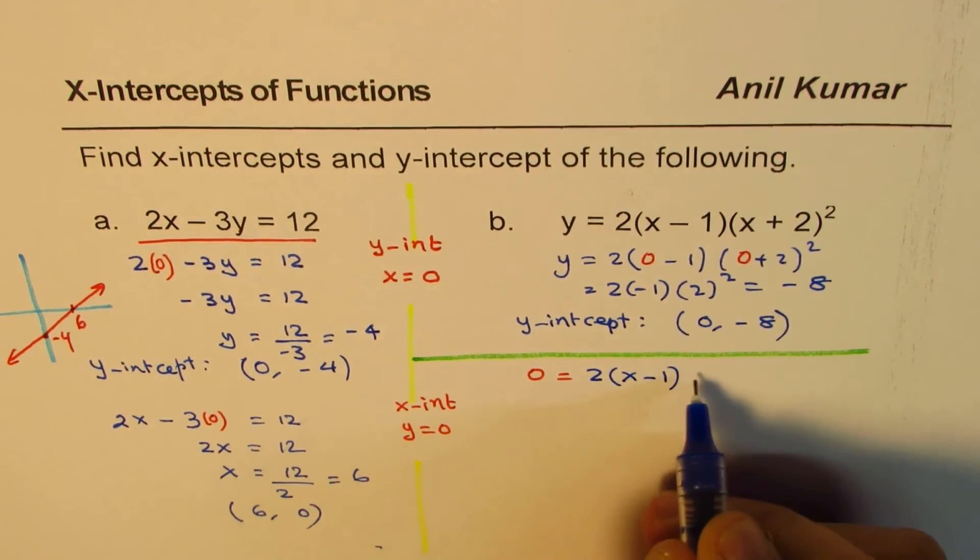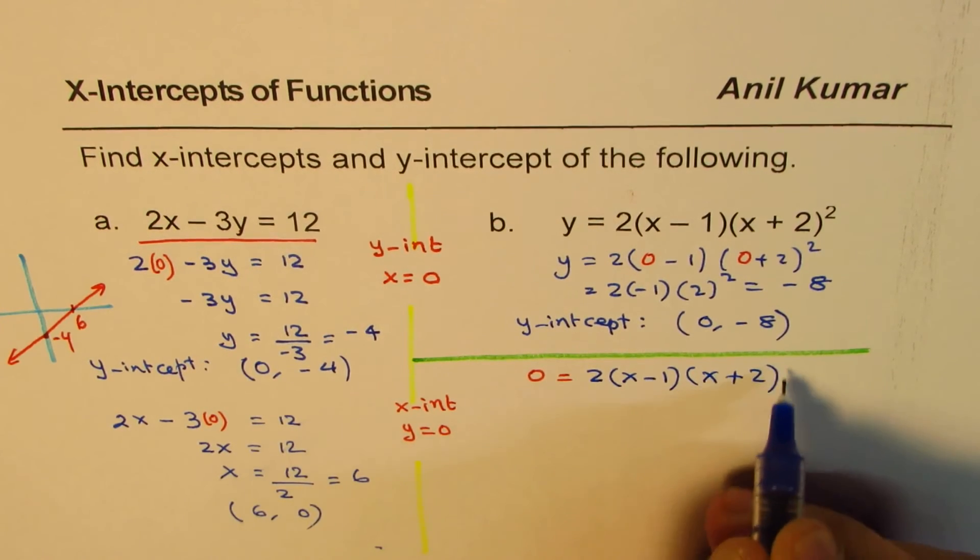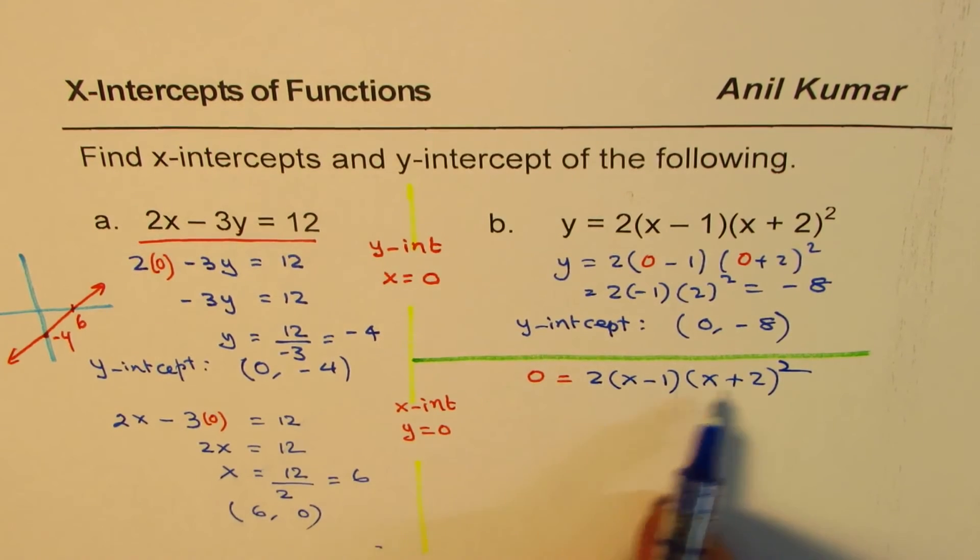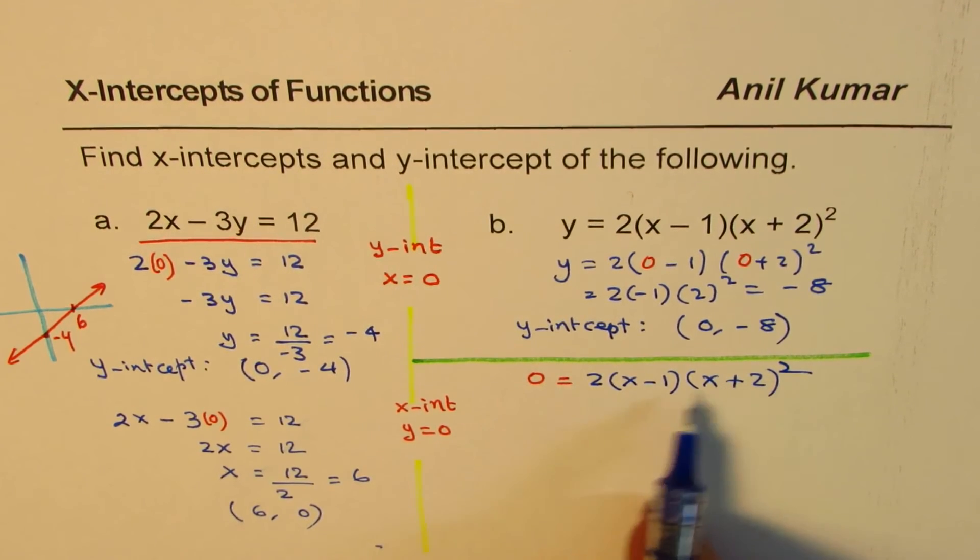So we get 0 equals 2 times (x - 1) times (x + 2)². Now when can the right side be 0? This could be 0 for x minus 1 equals 0 or x plus 2 whole squared to be 0.